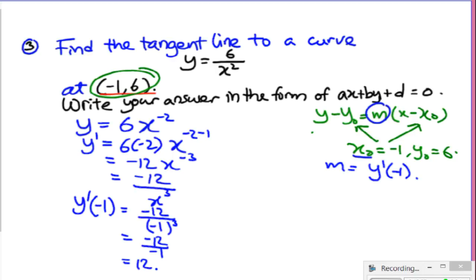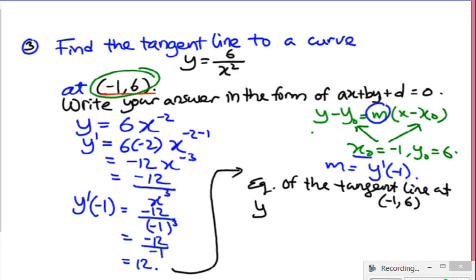Now the equation of the tangent line at this point is simply going to be y minus 6 equal to 12 times x minus negative 1. Again, when it's a negative value, use a bracket. So this is 12 times x plus 1, y minus 6.